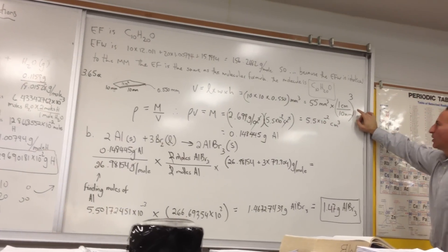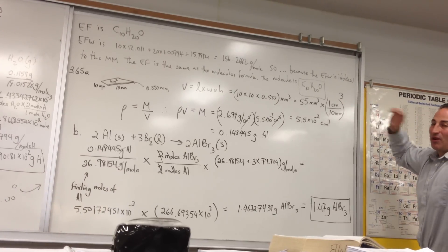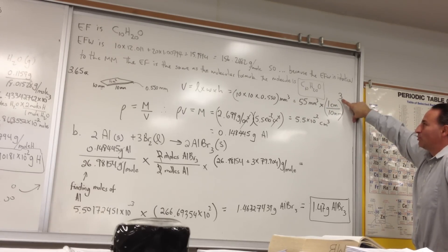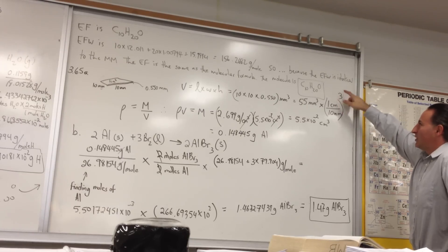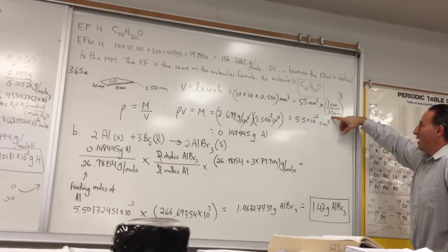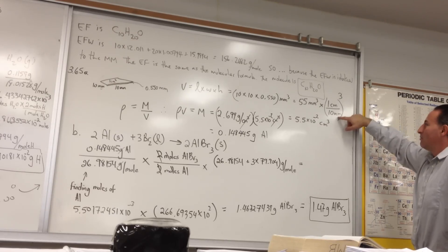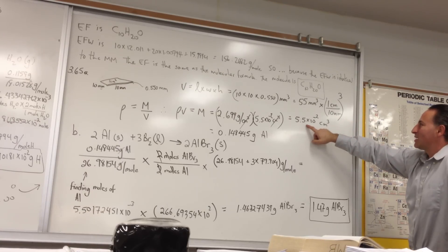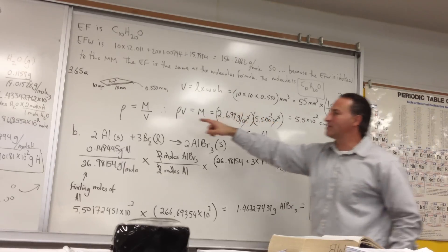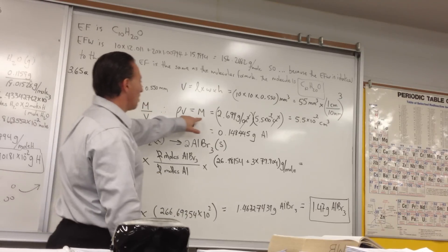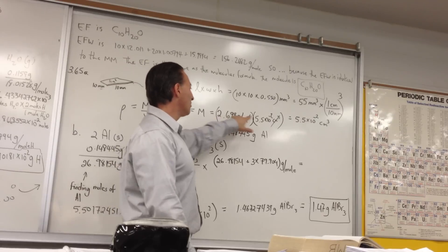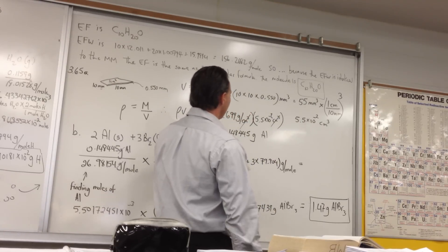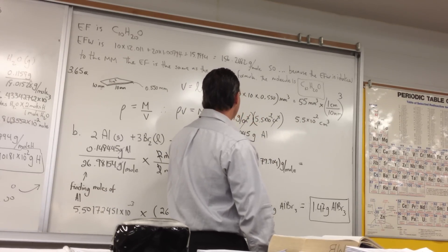We convert 55 mm³ to cm³, recalling that 10 mm equals 1 cm in linear measure, but since we're using volume the conversion factor must be raised to the power of 3. Distributing that power, 10 becomes 1000, giving us 5.5×10⁻² cm³. We enter this into the density equation — density equals mass over volume — and transpose to solve for mass. Using the density of aluminum, 2.699 g/cm³, times 5.5×10⁻² cm³ gives 0.148 grams of aluminum.